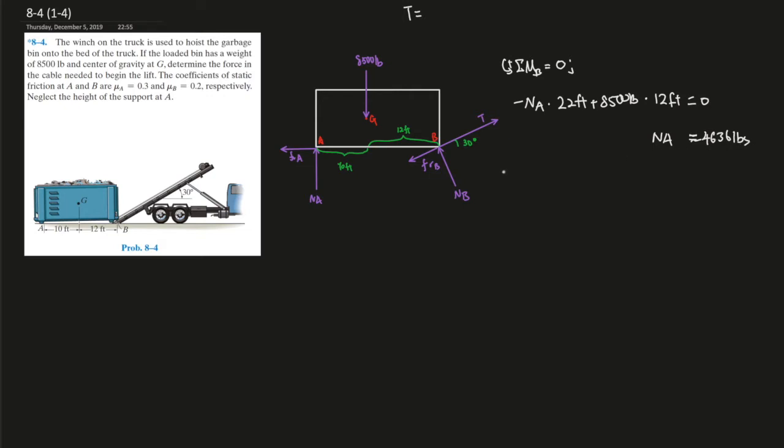So NA is this, and now we have to use the sum of the forces in Y and X direction, which is cool because we only left with two unknowns, one over here, one over here. So we can write a 2 times 2 matrix. So here we go. Let's begin with going up is positive, sum of the forces in the Y direction gives us zero. So that would be 4,636 pounds, that's going back up, that's NA is positive, minus 8,500 pounds going negative, and minus the friction at B, which is 0.2 times NB.